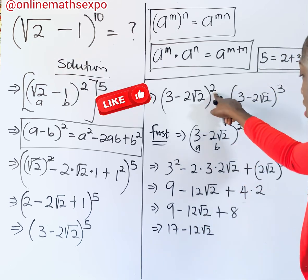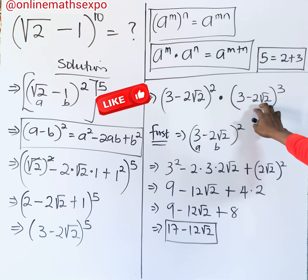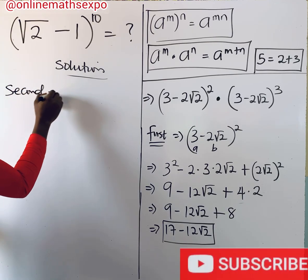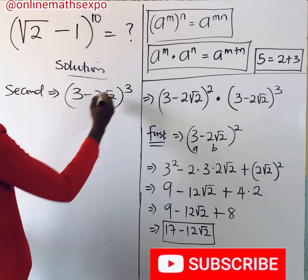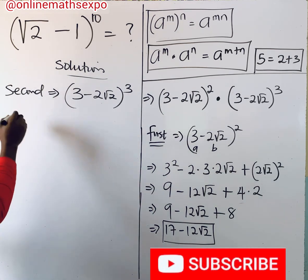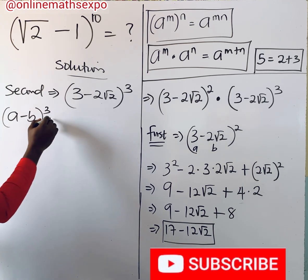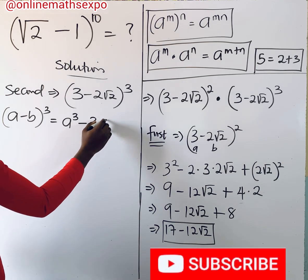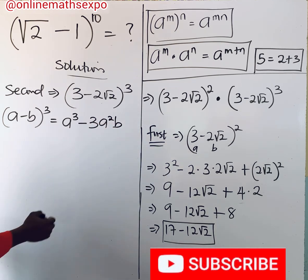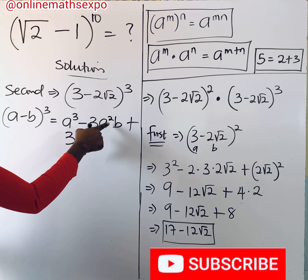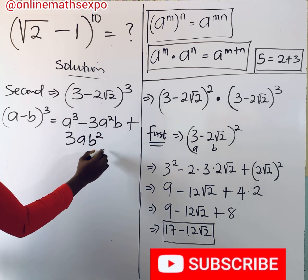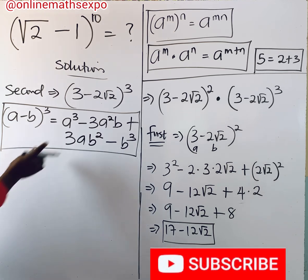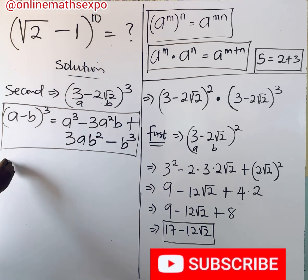Now let's expand (3 − 2√2)³. Remember, for (a − b)³: a³ minus 3a²b plus 3ab² minus b³. We switch signs and introduce coefficients: a³, then subtract 3a²b, then add 3ab², then subtract b³.